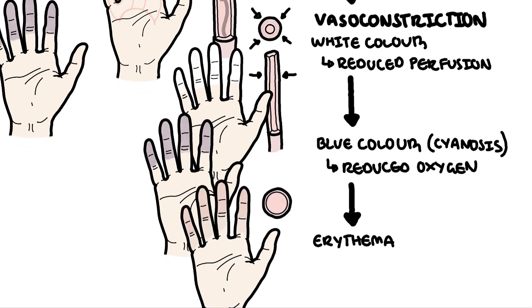The final color is red, or erythema. Upon re-warming, or resolution of the spasm, blood flow returns, causing a reactive hyperemia. The skin turns red. The blood vessels typically dilate.